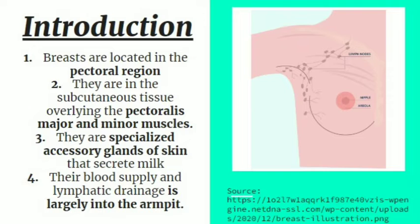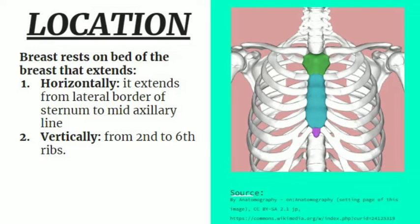Introduction: Breasts are located in the pectoral region, where there is the pectoral fascia. They are in the subcutaneous tissue overlying the pectoralis major and minor muscles. They are specialized sweat glands of the skin that secrete milk. The breast extends horizontally from the lateral border of the sternum to the mid-axillary line, and vertically from the second to the sixth ribs.